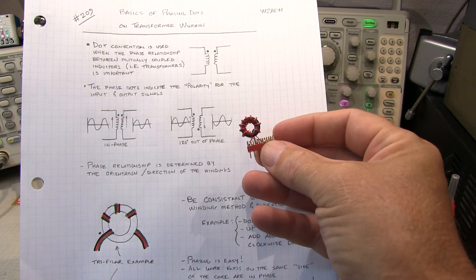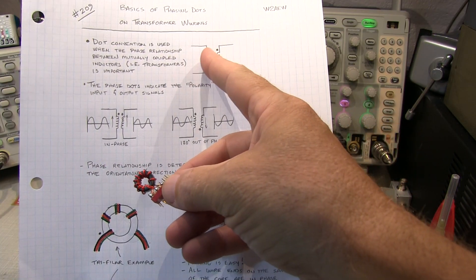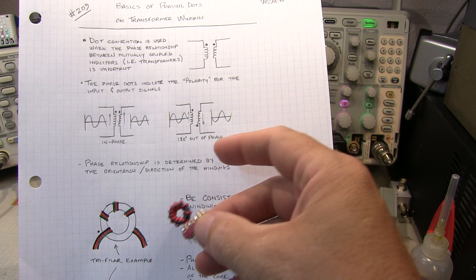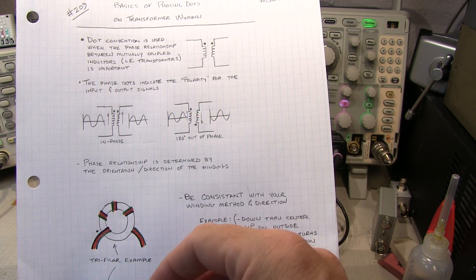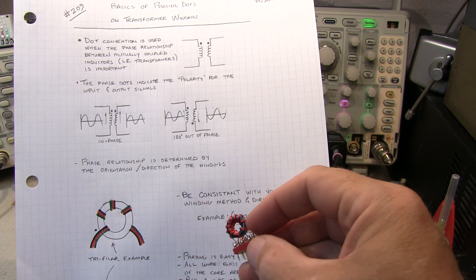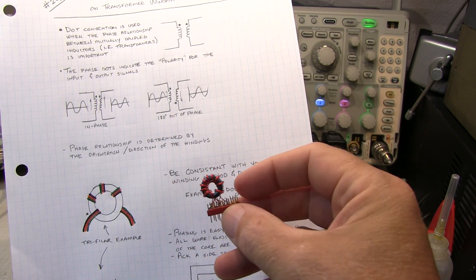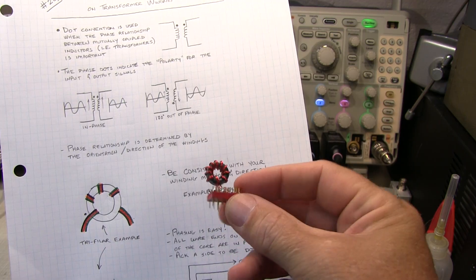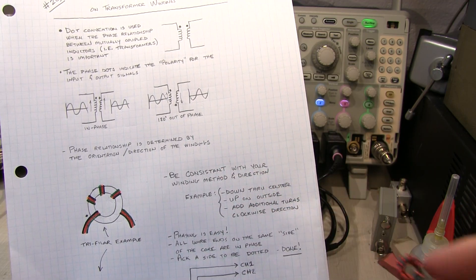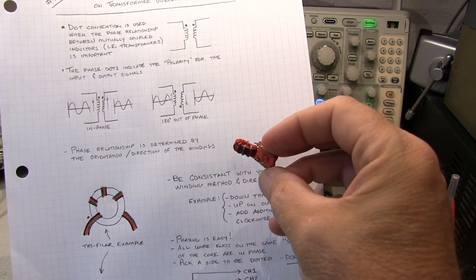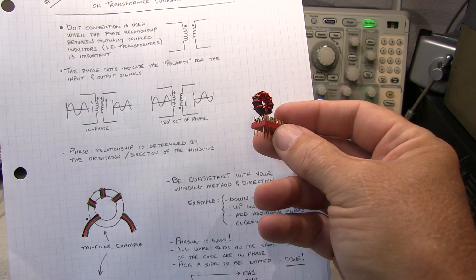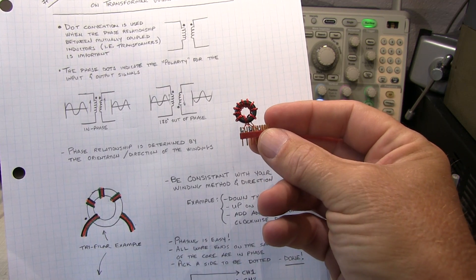And so I hope you learned a little something about what the dot convention is and how it relates to the phase of the windings and when it matters and when it doesn't. And then certainly when you're putting your circuits together and winding your own transformers, how to keep the phasing straight. But thanks again for watching. Comments are always welcome. Give me a big thumbs up if you like it and subscribe if you haven't done so already. Thanks again.